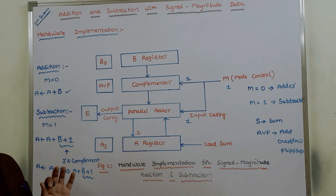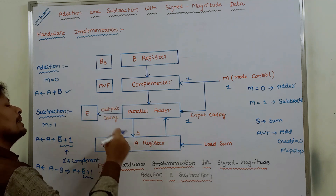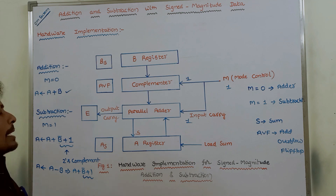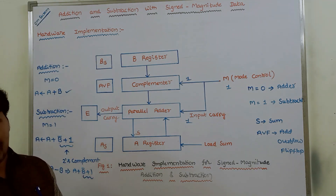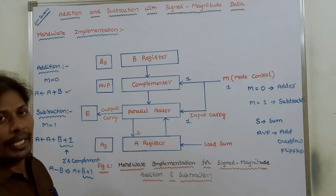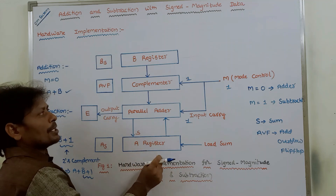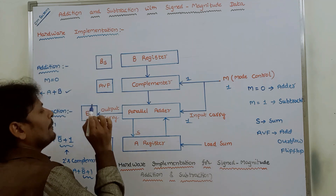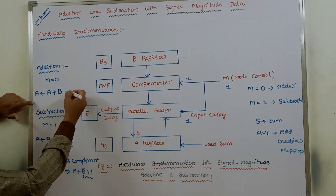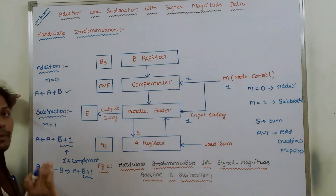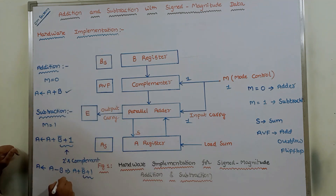Here A register can be used for two purposes: storing the first number, and finally storing the result. When performing the subtraction operation using 2's complement, if any output carry is generated, that carry can be discarded — this is an important point. When performing subtraction between the content of register A and the 2's complement of register B, any output carry generated must be ignored. So when M equals 0 we perform addition, and when M equals 1 we perform subtraction.